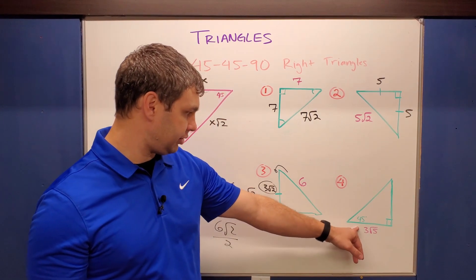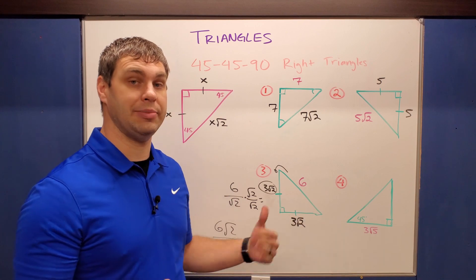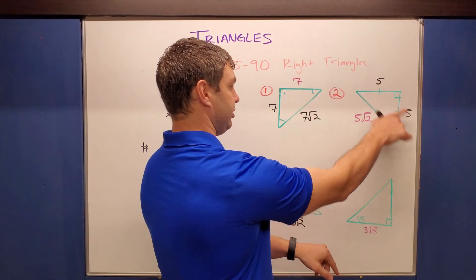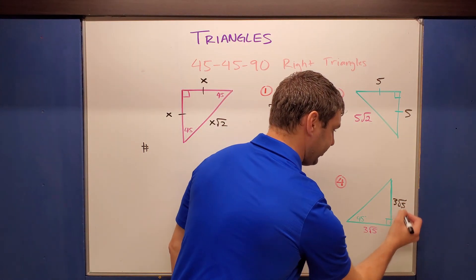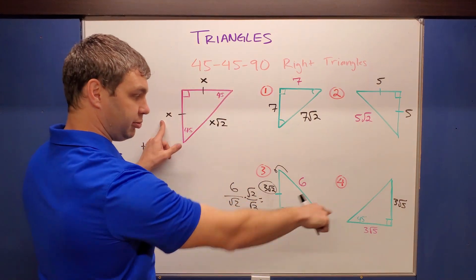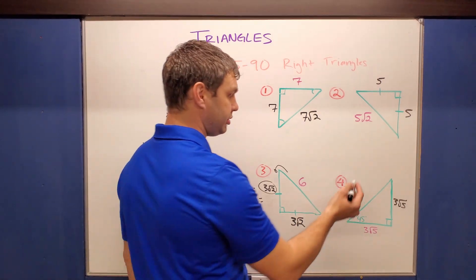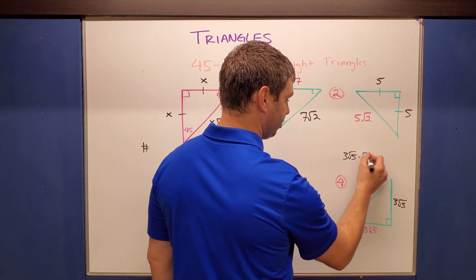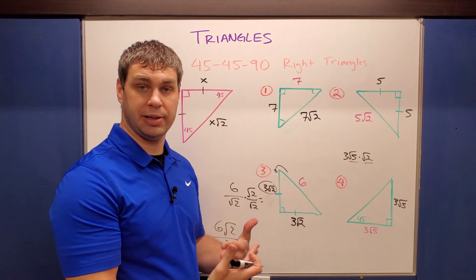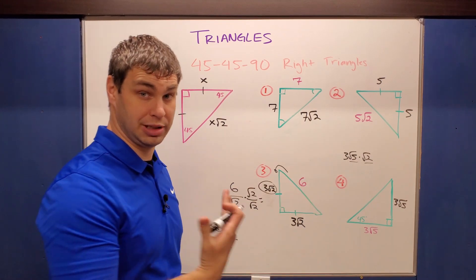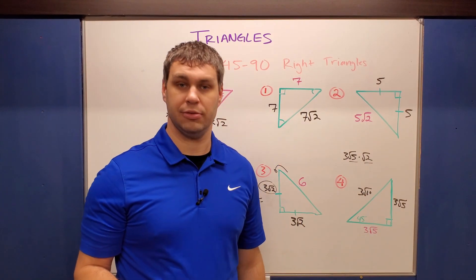The last 45-45-90 example gives one leg as 3√5. Since both legs are always equal, the other leg is also 3√5. For the hypotenuse, we multiply 3√5 by √2. The 5 and 2 are both inside square roots so they multiply together, giving 3√10. So the hypotenuse is 3√10.